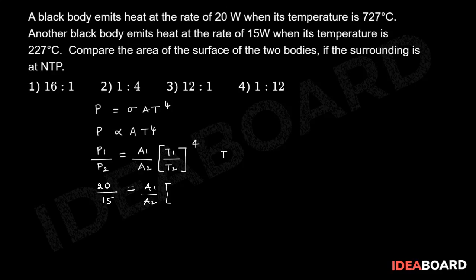So here T1 value 727 degrees Celsius they given, we need to convert into absolute scale. So let us add 273, that equal to 1000 Kelvin. T2 is equal to 227, let us add 273, that equal to 500 Kelvin.